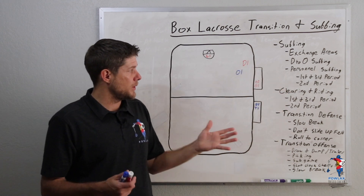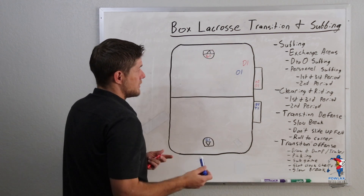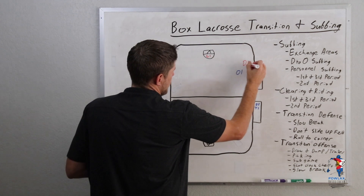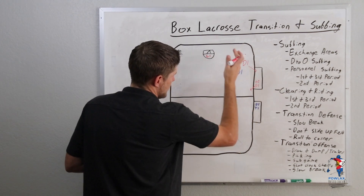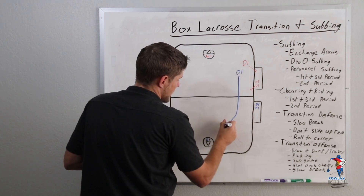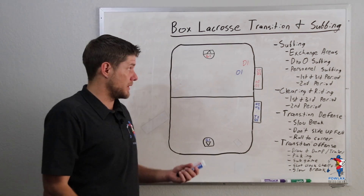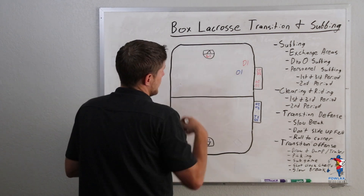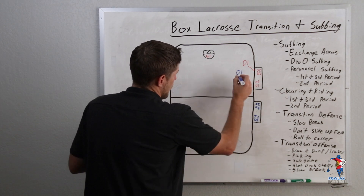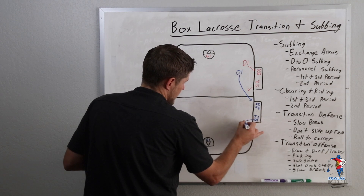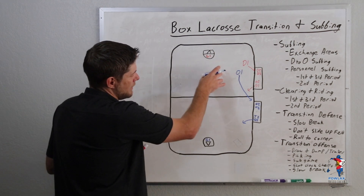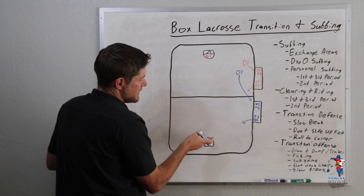In the first and third period, our bench is on our defensive half. If the red team is clearing, as the ball moves up the floor, D1 can sub out for O1 as the ball moves up. Because both teams are going to be doing D-to-O subbing, O1 just gets in and plays defense. Now if we're using personnel subbing and the red team is clearing, D1 will sub out for O1, who will come on the floor, hit the exchange area, and release D1. In the first and third periods, we're really able to utilize personnel subbing because we're releasing so far into our defensive end.